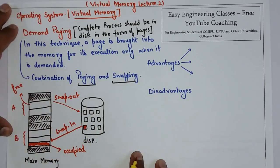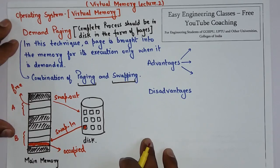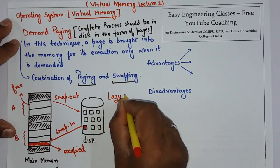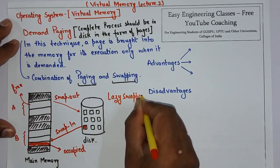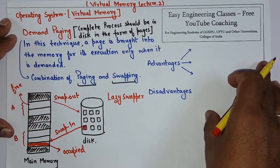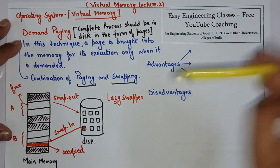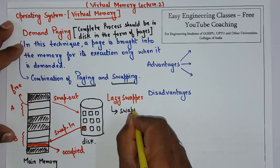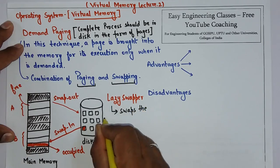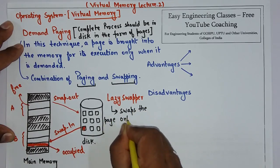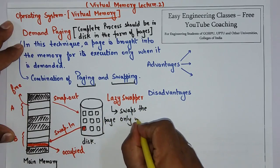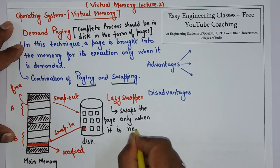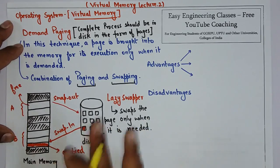This is how demand paging works, and it is called the lazy swapper method. It is called the lazy swapper method because it swaps pages only when they are needed.